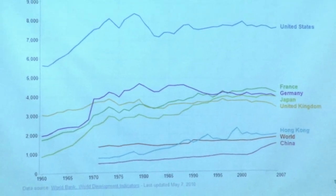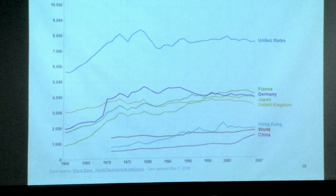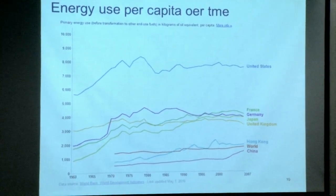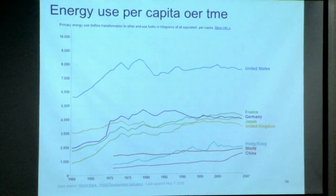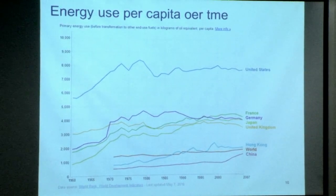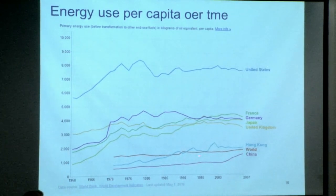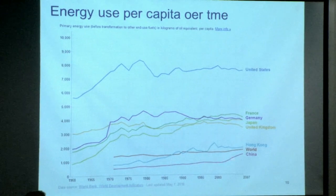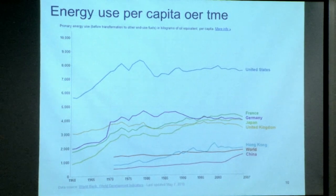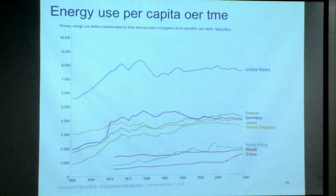If you look at energy use per capita over time, for the US it's pretty flat — slightly different data source, but flat for a long time, considerably higher than other rich countries. Here's the world average per capita. Here's the US. Here's China rapidly growing toward the world average per capita. The growth of China is a very big story that I'll spend a little more time on today and come back to.